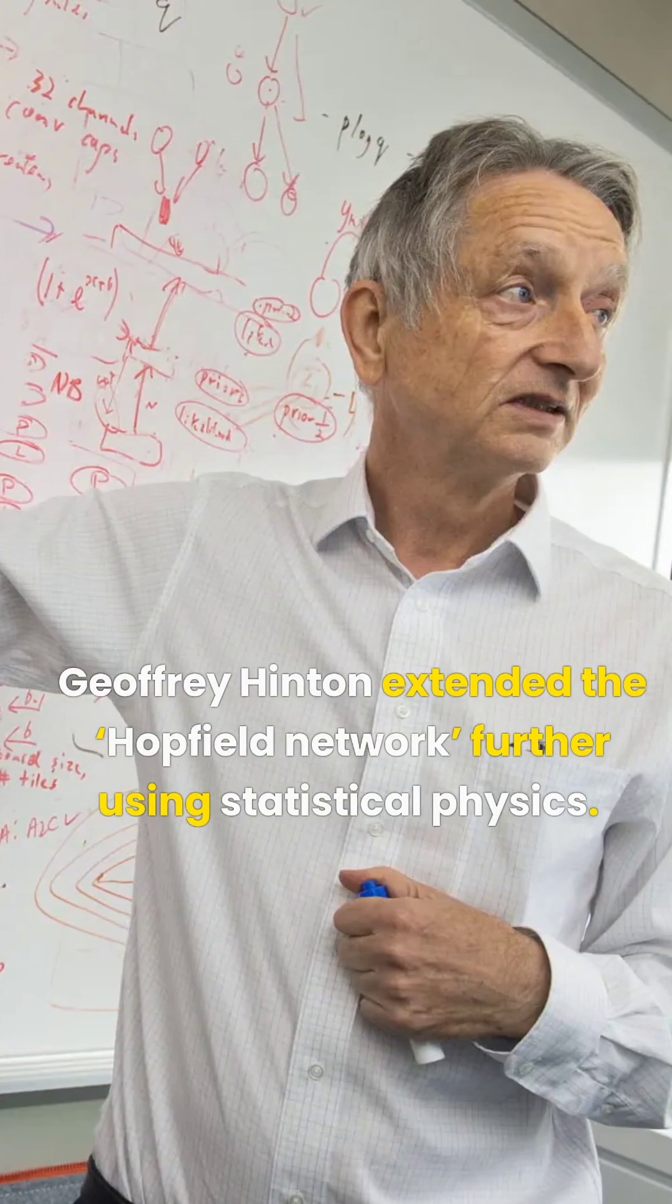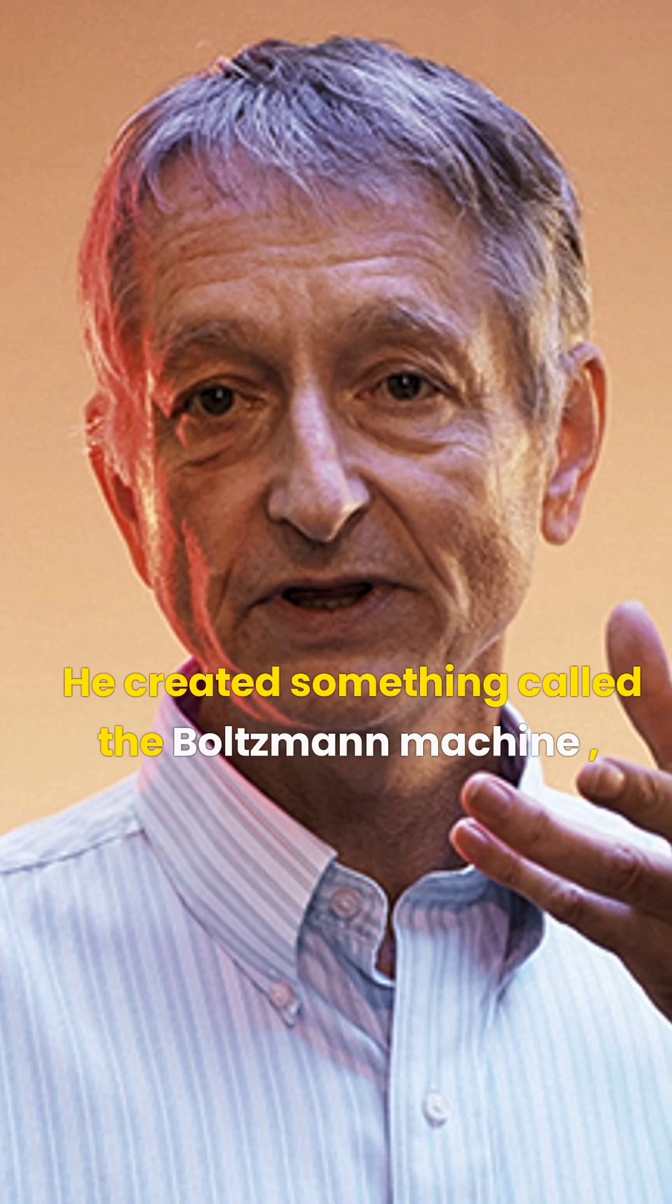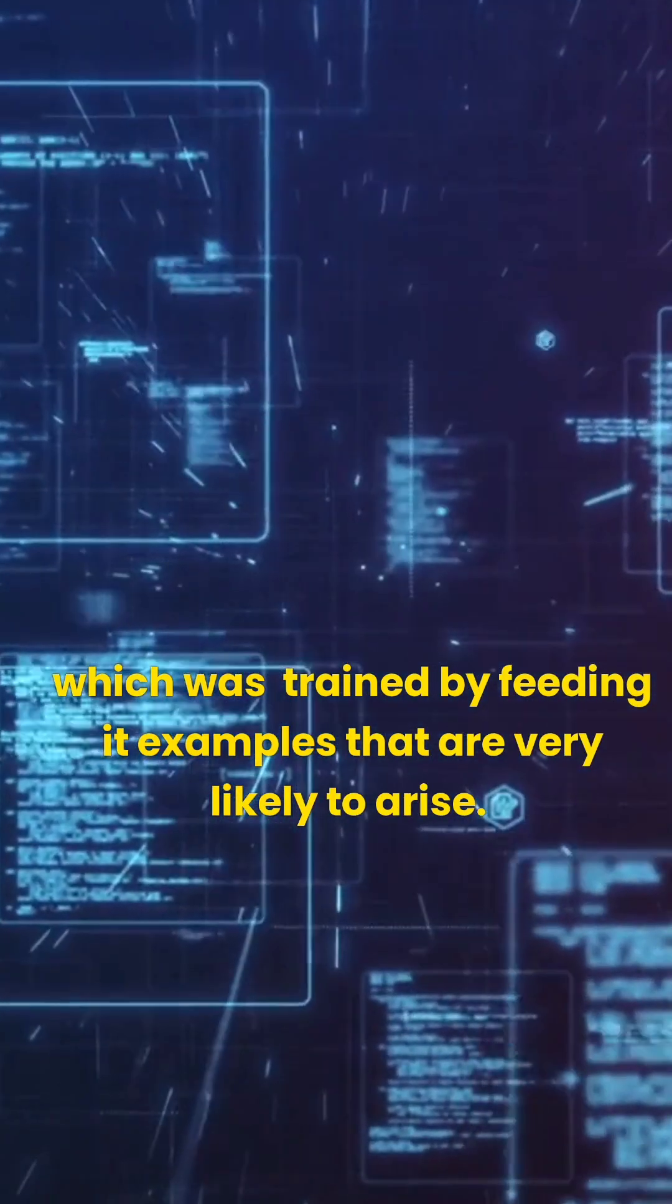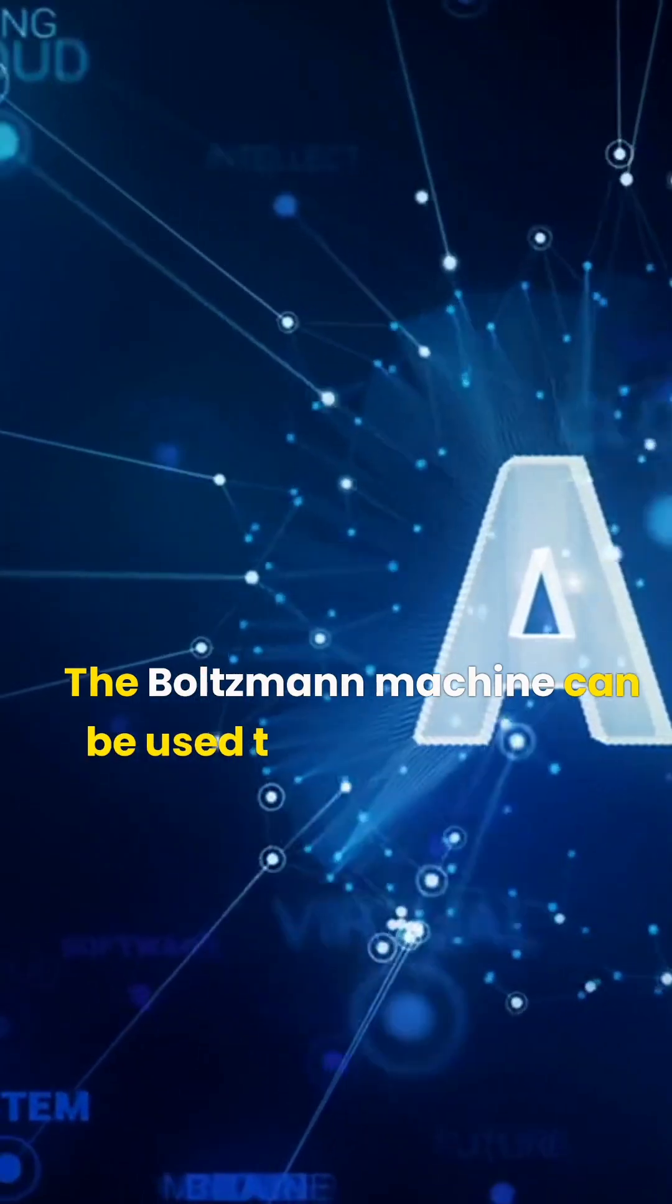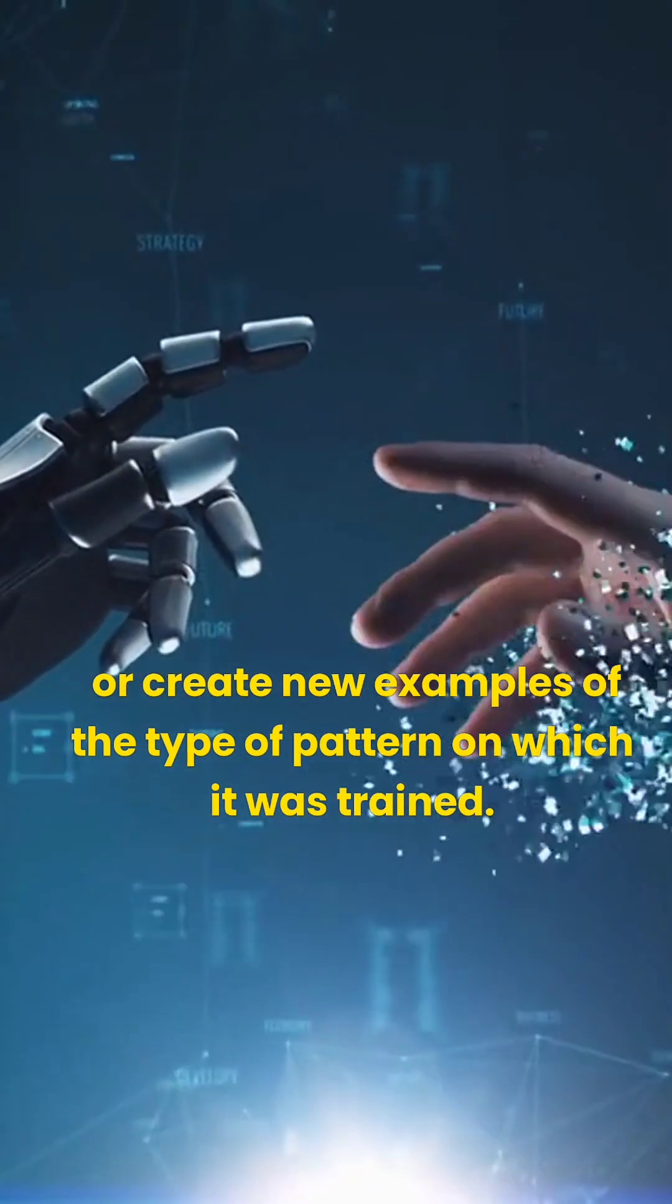Geoffrey Hinton extended the Hopfield network further using statistical physics. He created something called the Boltzmann machine, which was trained by feeding it examples that are very likely to arise. The Boltzmann machine can be used to classify images or create new examples of the type of pattern on which it was trained.